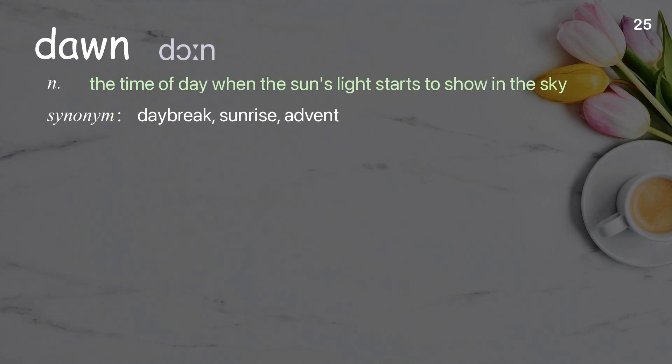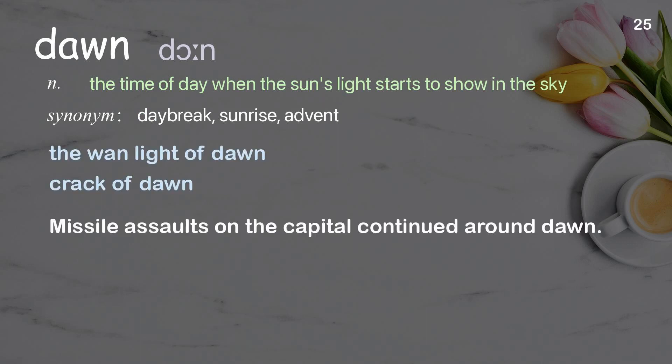Dawn: the time of day when the sun's light starts to show in the sky. Examples: the wan light of dawn; crack of dawn. Missile assaults on the Capitol continued around dawn.